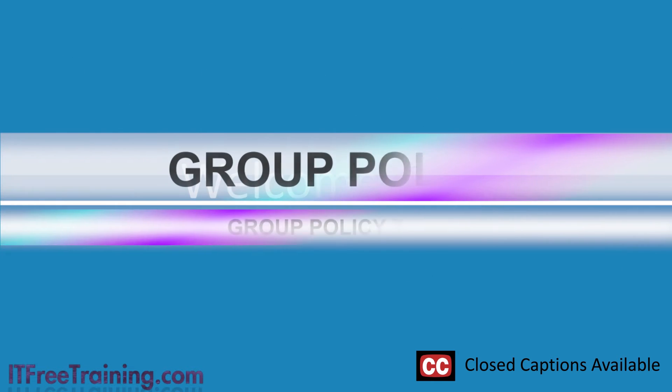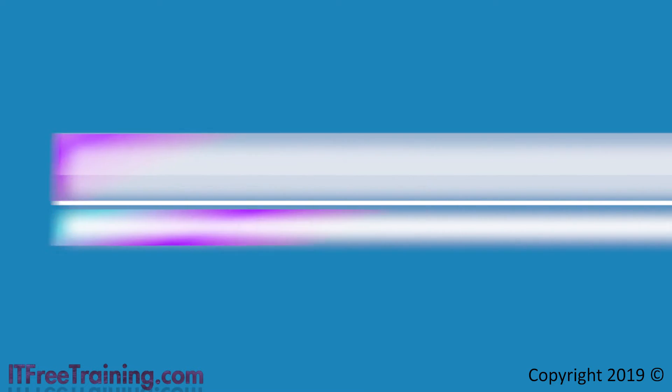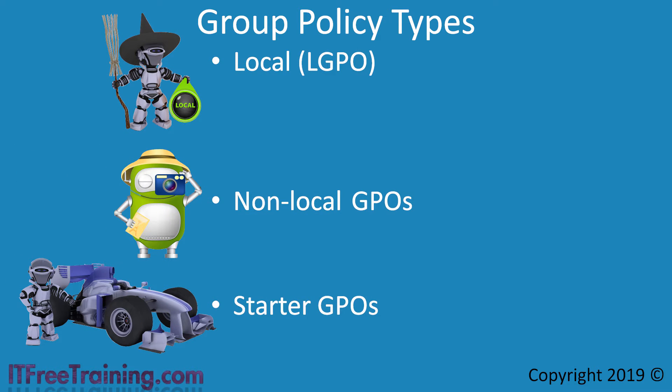In this video from ITFreeTraining I will look at the different group policy types, of which there are 3. Understanding what these are used for will help you later on in the course when more advanced topics are covered. The 3 group policy types are Local, Non-Local and Starter. Local GPOs — GPO stands for Group Policy Object — are group policies that apply to the local computer only. These are also referred to as LGPO, which stands for Local Group Policy Object. Non-Local GPOs are essentially group policies that are stored in Active Directory and deployed to computers in the domain. Starter GPOs are essentially a GPO template that you can use to create other GPOs.